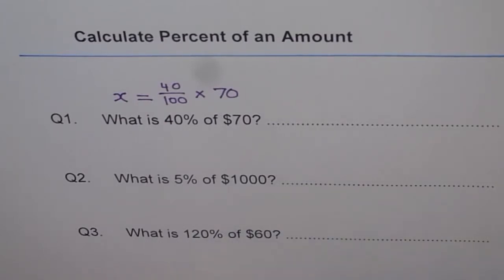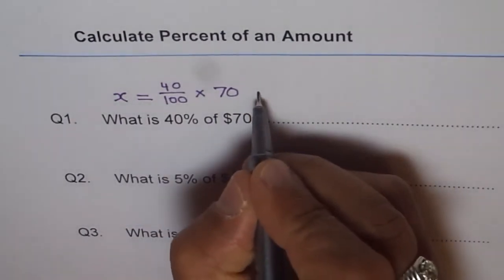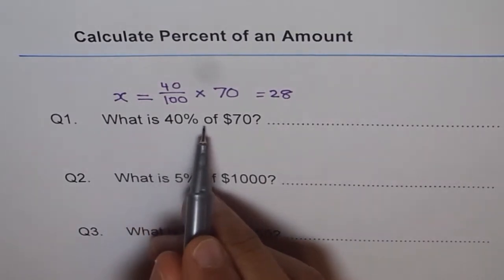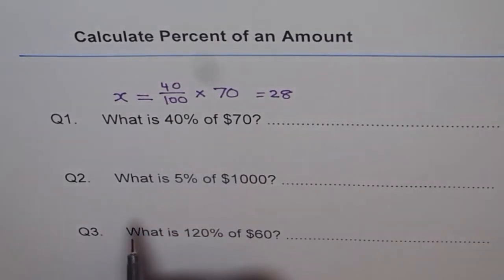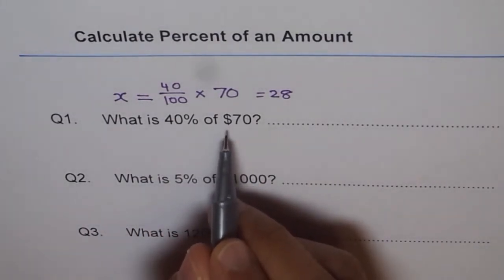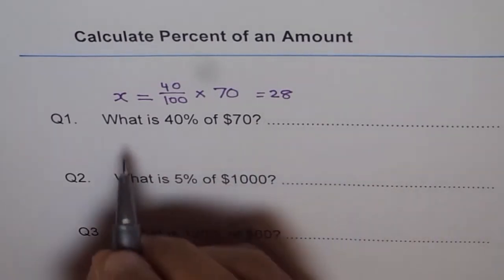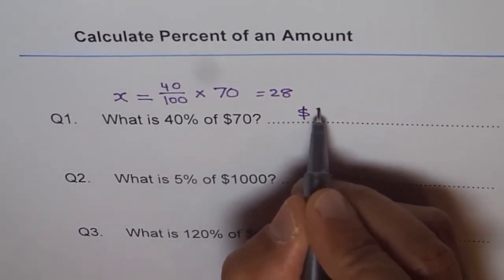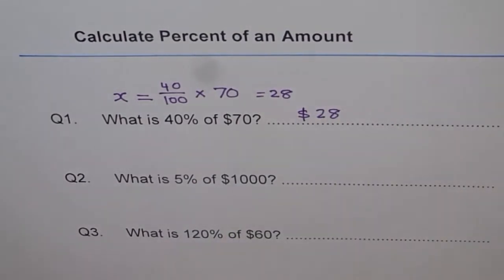So 28 is your answer. When they are asking about dollars, don't forget to write the unit. So x equals dollar 28. That is how you first create an equation and then solve it. Let me do the next one again for you.